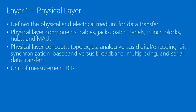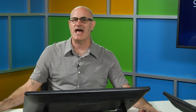Physical layer concepts include topologies — what the network physically looks like — analog versus digital encoding, bit synchronization, baseband versus broadband, multiplexing, and serial data transfer. For analog, think of the hands on an old clock — it can be any value. Digital is discrete, like a digital clock that jumps from 10:05 directly to 10:06. The unit of measurement at this level is bits.